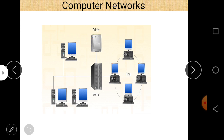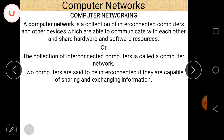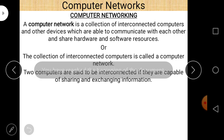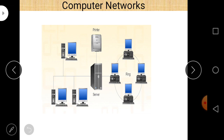The definition says a computer network is a collection of interconnected computers and other devices which are able to communicate with each other and share hardware and software resources. The main purpose is to share hardware and software resources — for example, sharing a single printer among three computers using a computer network.